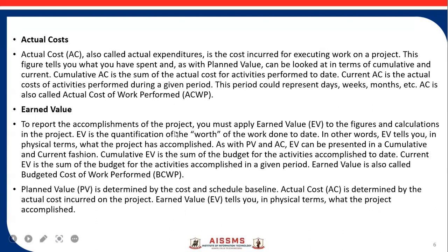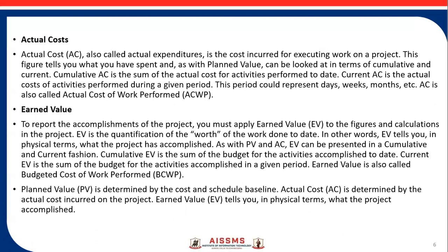To report the accomplishment of the project, you must apply earned value to the figures and calculations in the project. EV is the quantification of the work done today. In other words, EV tells you in physical terms what the project has accomplished. As with planned value and actual value, EV can be represented in cumulative and current fashion. Cumulative EV is the sum of budget for activities accomplished to date. Current EV is the sum of budget for activities accomplished in a given period. Earned value is also called the budgeted cost of work performed. Planned value is determined by the cost and schedule baseline; actual cost is determined by actual cost incurred on the project; whereas earned value tells you in physical terms what the project has accomplished.